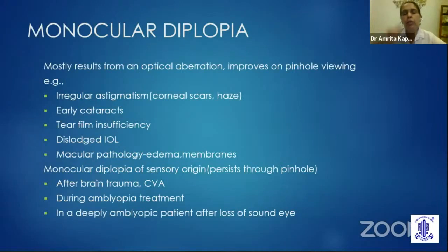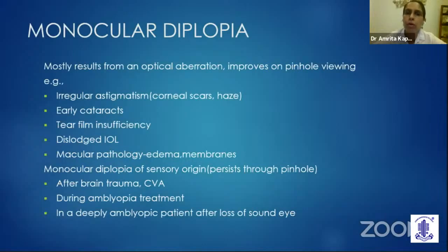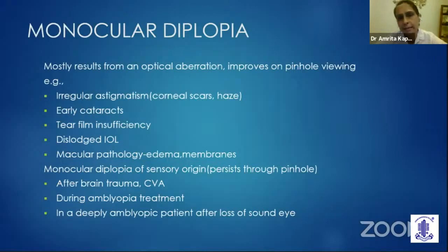We have to do a good anterior segment examination and look for irregular astigmatism due to corneal scars, do a slit lamp examination of the cataract to look for anterior and posterior irregularity, tear film insufficiency, dislocated IOL, and macular pathology. However, in some cases of monocular diplopia, even pinhole does not help. These are cases where we have to look at neurological possibilities like post-brain trauma patients and cerebrovascular accidents. Sometimes even patients undergoing amblyopia treatment complain of monocular diplopia.